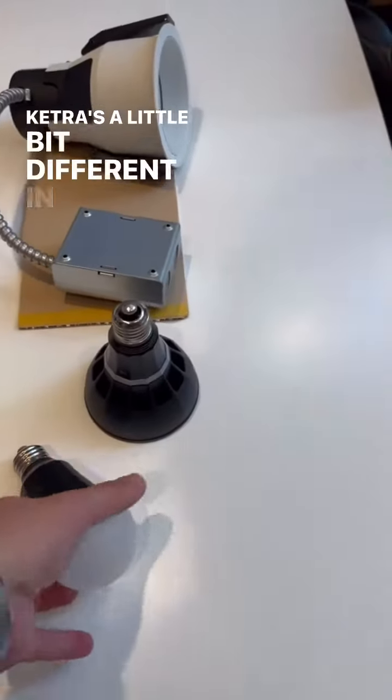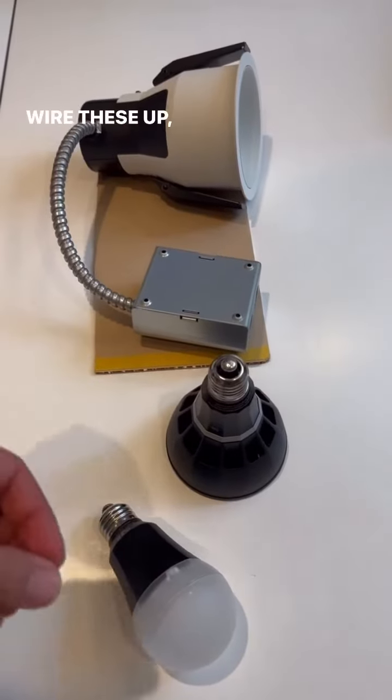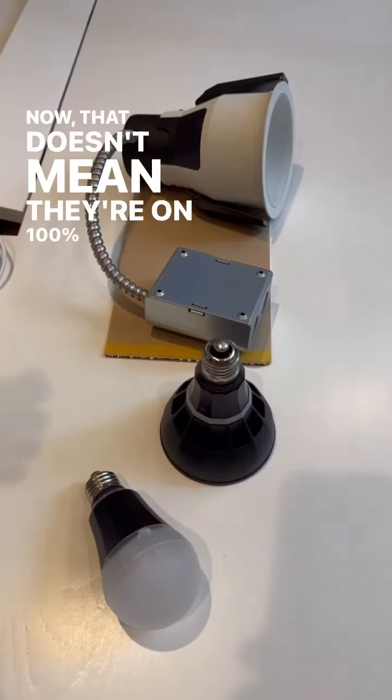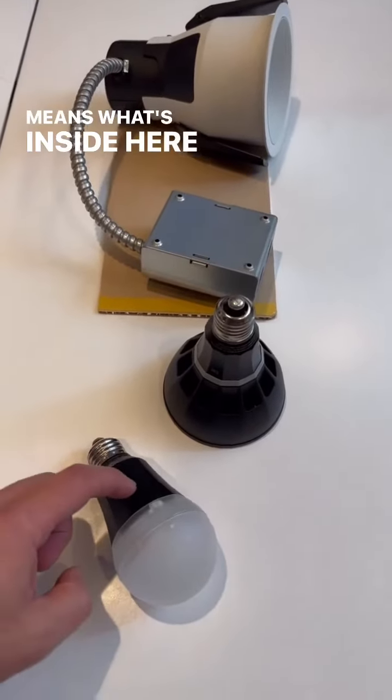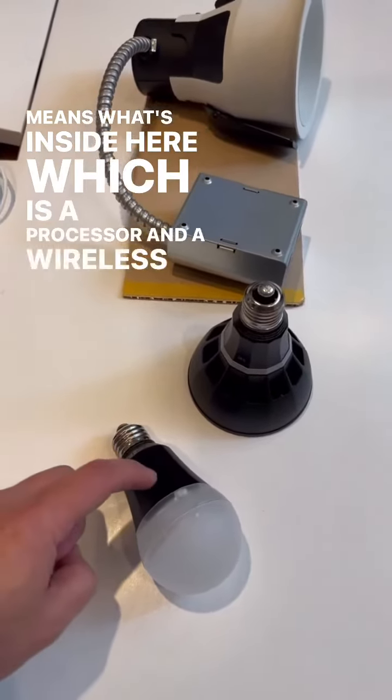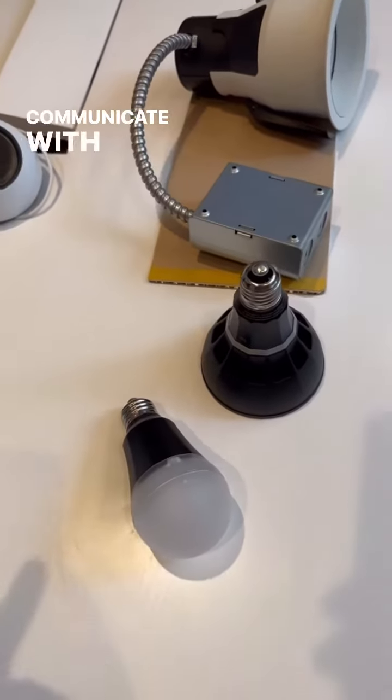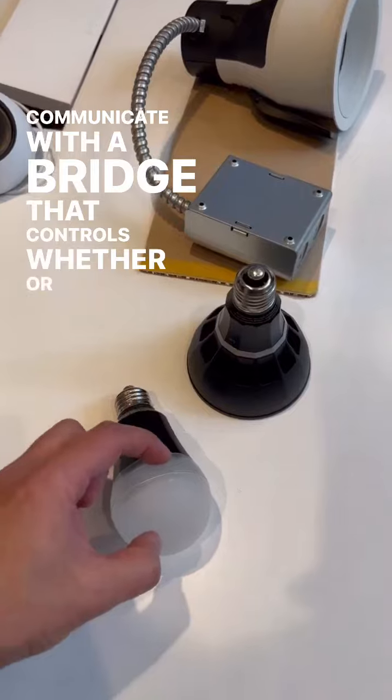Ketra is a little bit different in that when you wire these up, you want to make sure that these fixtures have power 100% of the time. Now, that doesn't mean they're on 100% of the time, but it means what's inside here, which is a processor and a wireless transmitter, is getting power all the time and allows it to communicate with a bridge that controls whether or not the light engine is on and how it's being used.